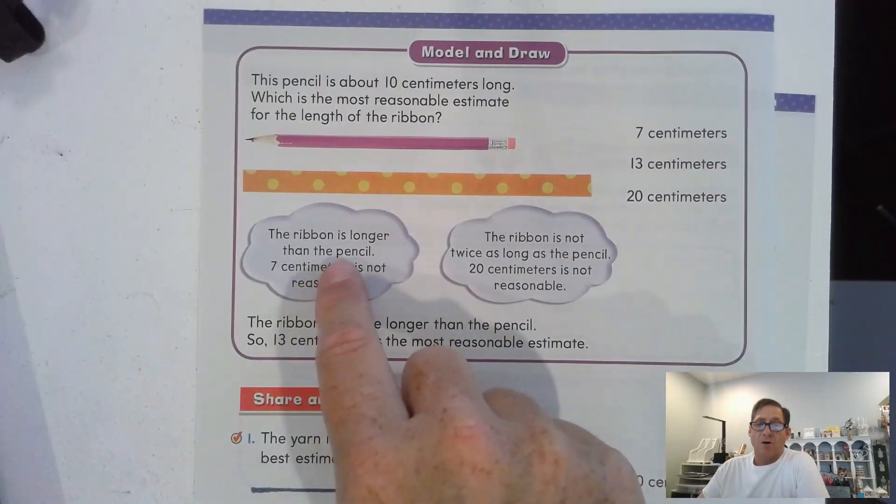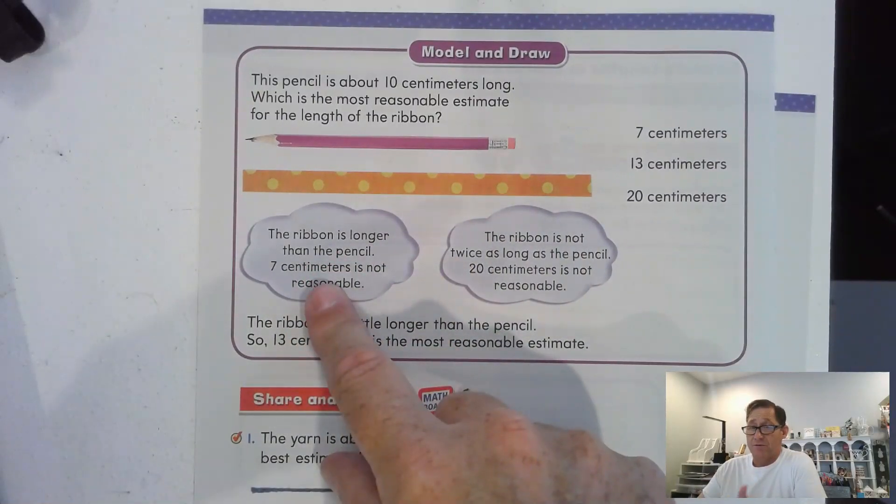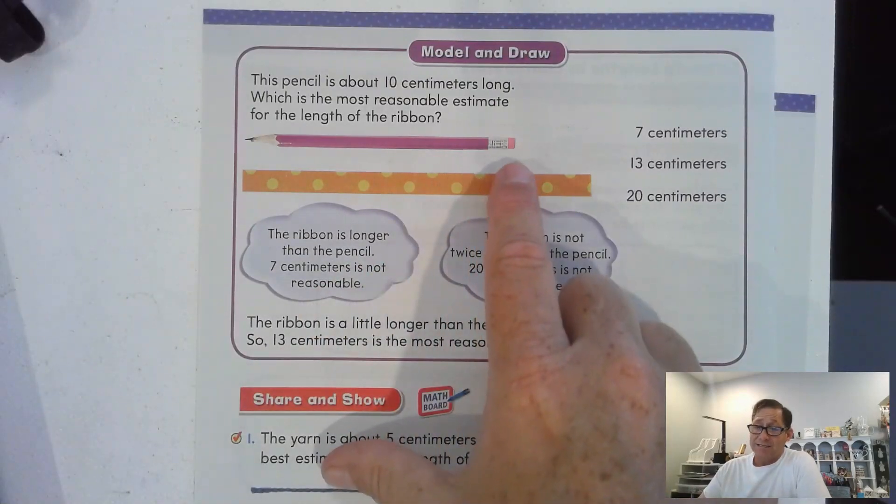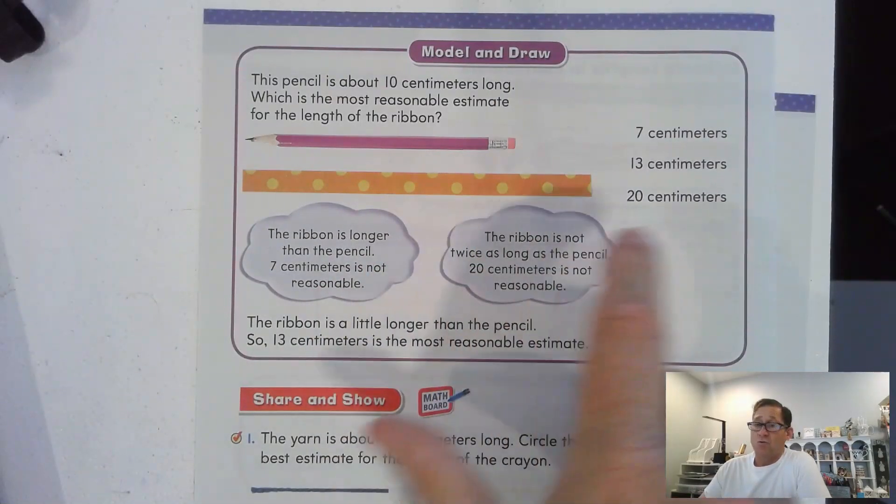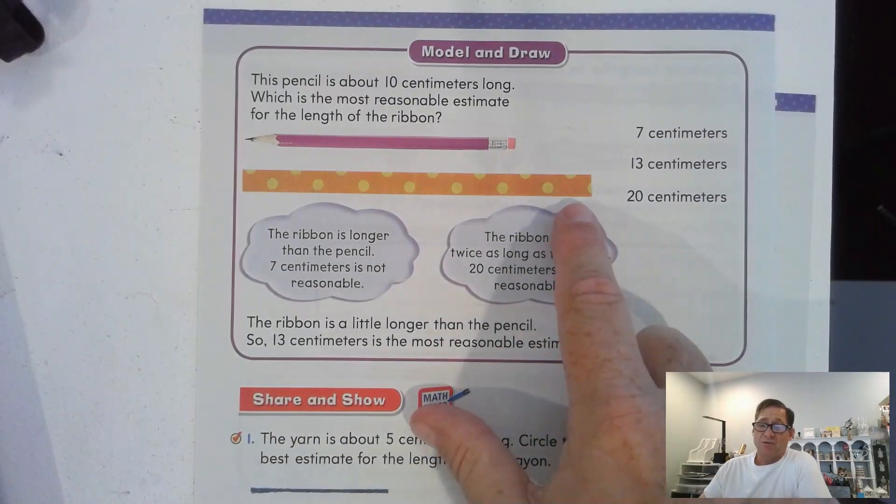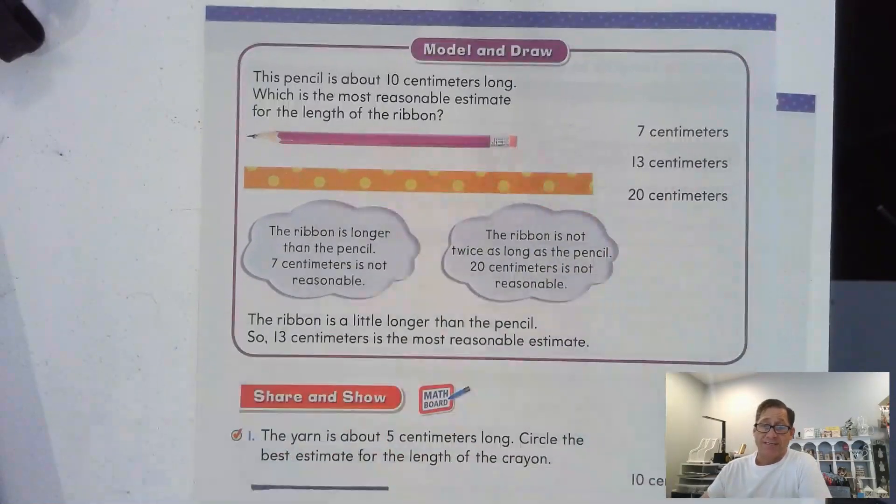The ribbon is longer than the pencil, right? So, 7 is not reasonable. That can't be right. The ribbon is not twice as long as the pencil, so 20 is not reasonable. So the most reasonable answer is 13.